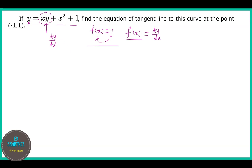In the problem we have a function: if y = xy + x² + 1, find the equation of tangent line to this curve at the point (-1, 1).